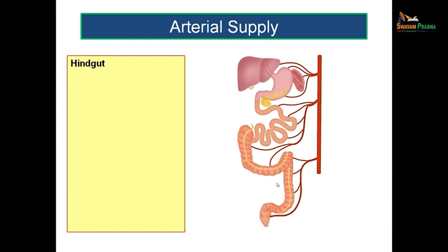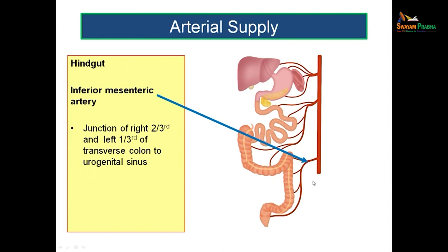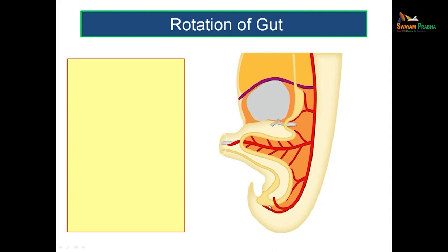The hindgut is supplied by the inferior mesenteric artery — the third major artery arising from the abdominal aorta. This supplies the remaining portion, from the junction of the right two-thirds and left one-third of the transverse colon onwards: the left one-third of the transverse colon, the descending colon, the sigmoid colon, the rectum, and the anal canal — all supplied by the inferior mesenteric artery.